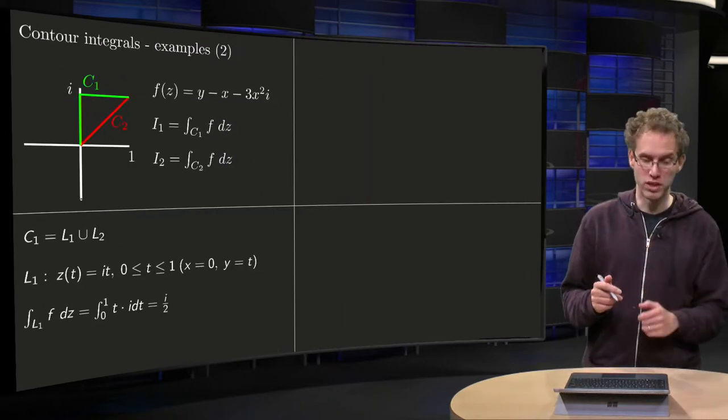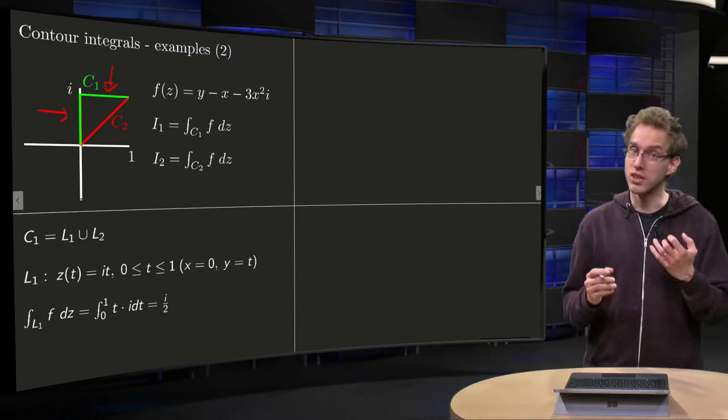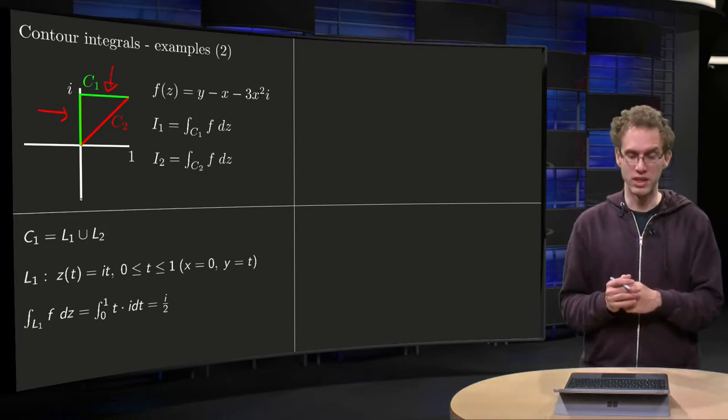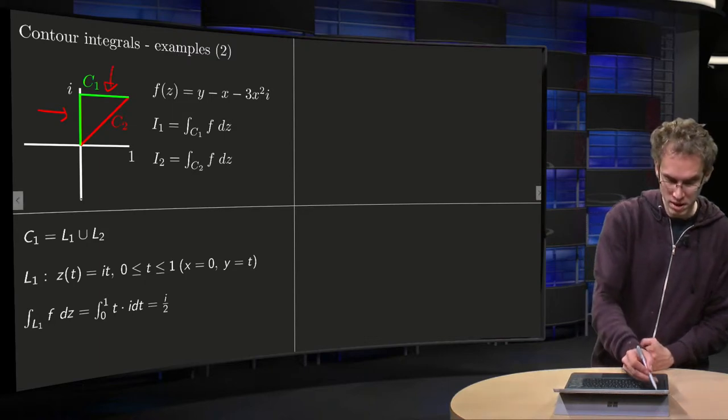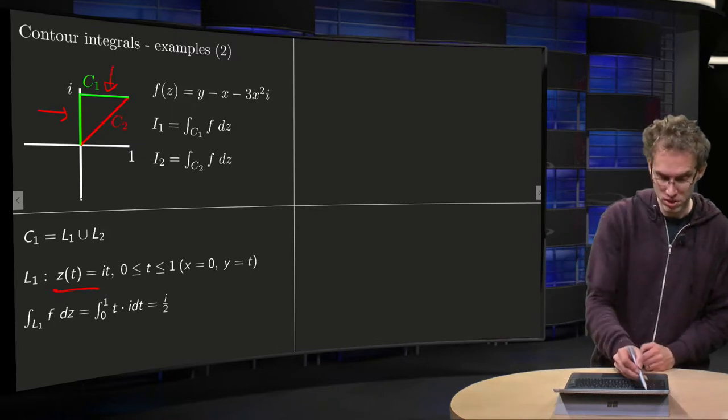So let's start with C1. Well, C1 consists of two parts, L1 and L2. Parametrization is not given, so we will have to find it ourselves, but it consists of two lines. So first we parametrize L1, the first line: z of t equals i times t, t between 0 and 1.